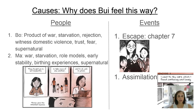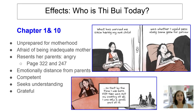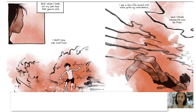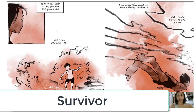The effects of the people and the events on Thi today are once again seen in chapters one and ten — how she's unprepared for motherhood, afraid of being an inadequate mother, resenting her parents with anger and emotional distance. But she realizes she does have some competency. She is a survivor, a thread traced throughout this book, and she seeks understanding and is grateful.